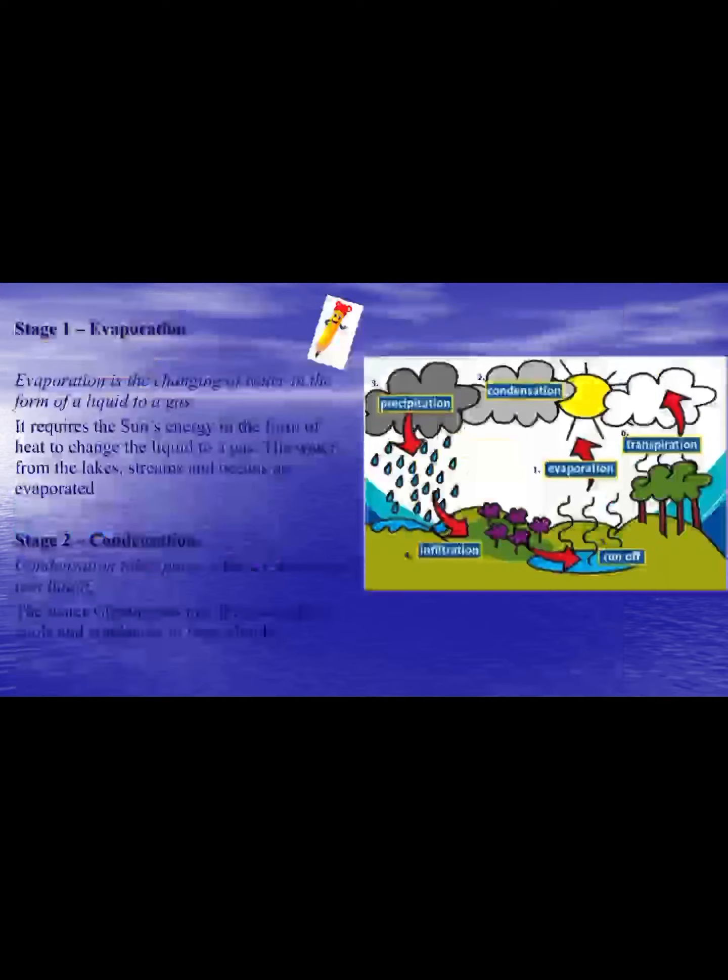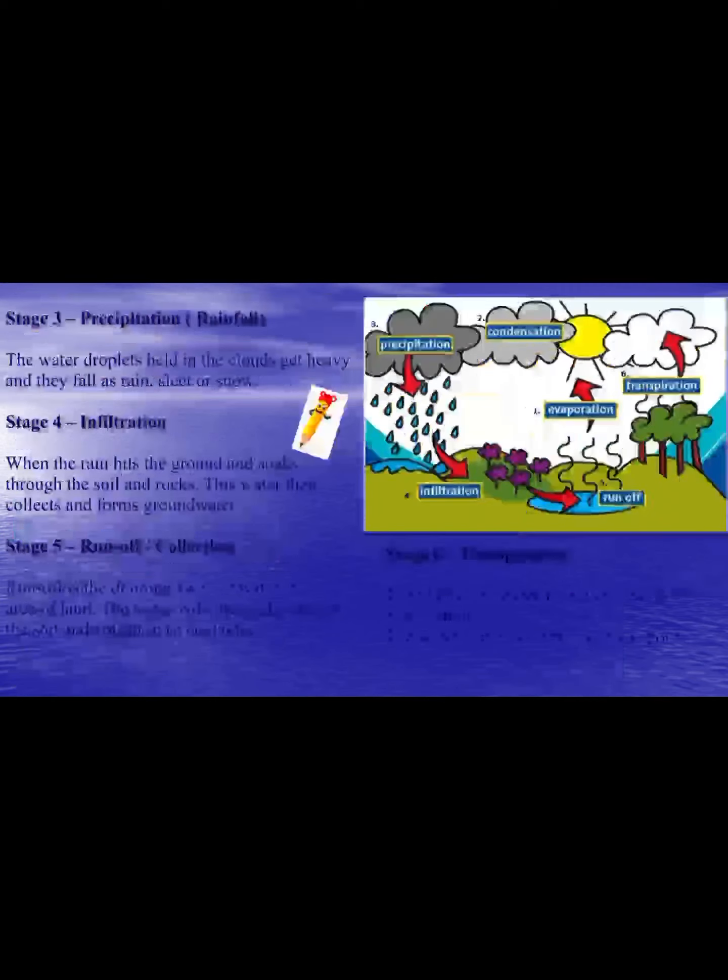Condensation: the water vapor rises up and collects in clouds. As the clouds rise up they get colder and liquid water is formed in the clouds. Remember, evaporation is liquid water going to gas, and condensation is the reverse — gas back to liquid. You can see condensation when steam hits a cold window.